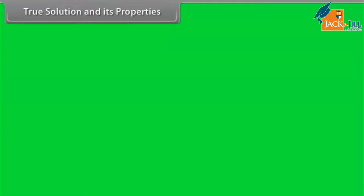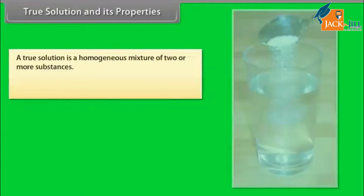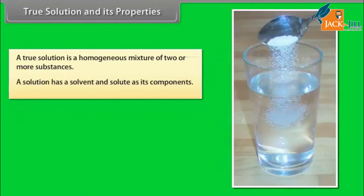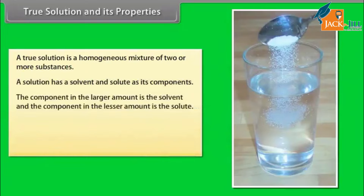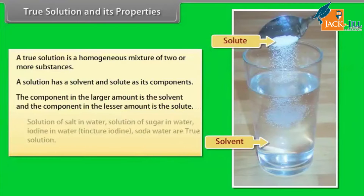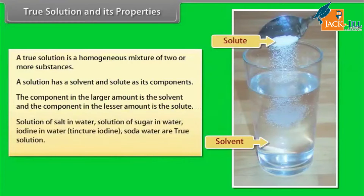True solution and its properties: A true solution is a homogeneous mixture of two or more substances. A solution has a solvent and solute as its components. The component in the larger amount is the solvent, and the component in the lesser amount is the solute. Examples include solution of salt in water and solution of sugar in water.